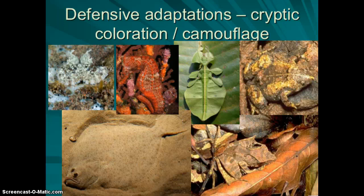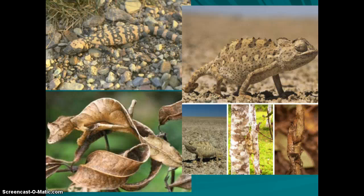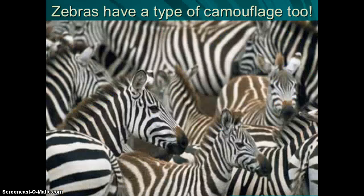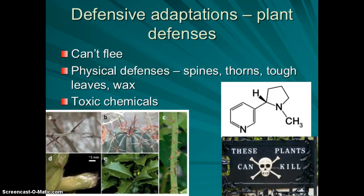Another way animals avoid predators is by blending in — called cryptic coloration or camouflage. You see this across many organisms; they're very good at blending into their environment. If the predator can't see them, it probably won't attack. Zebras use this along with social behavior: their stripes make it very hard to single out one individual from the herd.